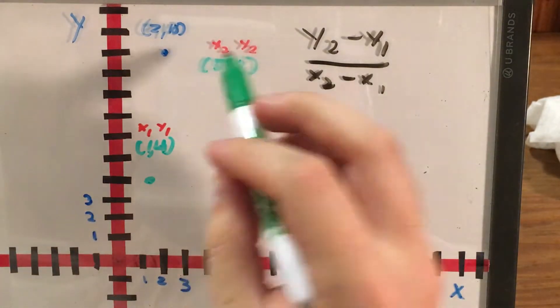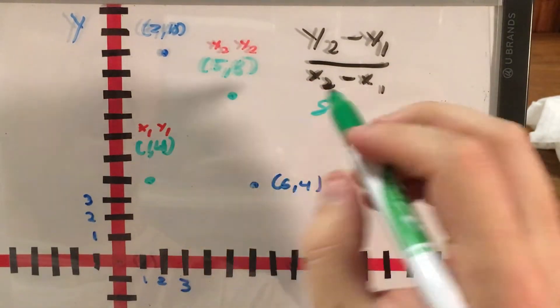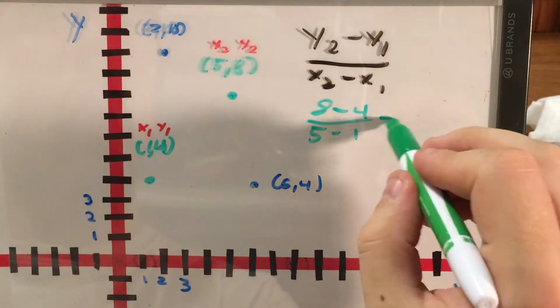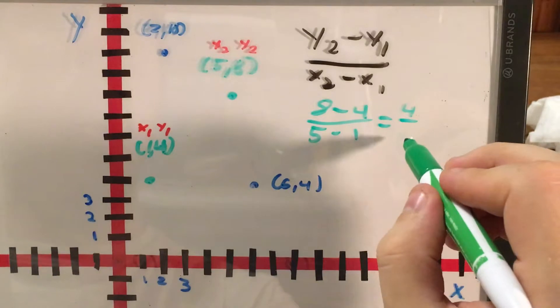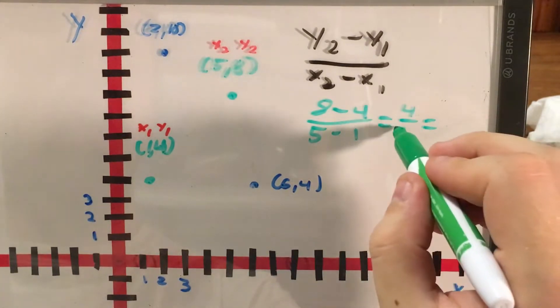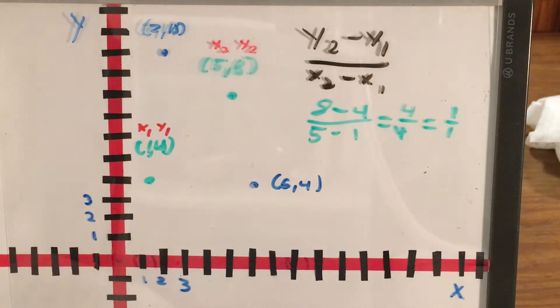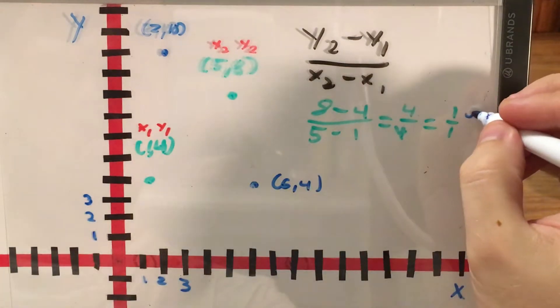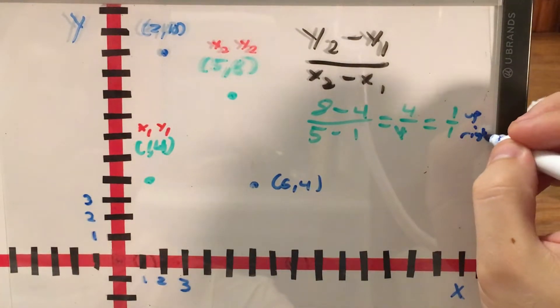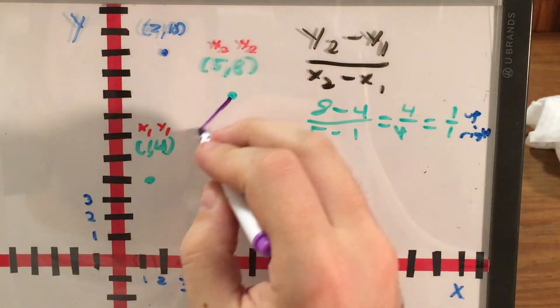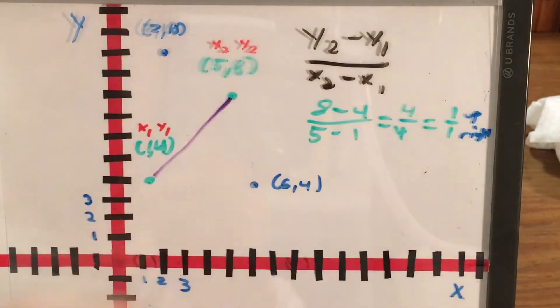So for the first line, my slope is y2 is 8 minus y1 is 4 divided by x2 is 5 minus x1 is 1. 8 minus 4 is 4, 5 minus 1 is 4. So I'm going to call this slope 1 over 1. This is really just 1. But remember, this tells me that I'm going 1 up for every 1 I'm going right. And so as I figure this out, I'm actually going to take my purple pen and then I'll draw this line.